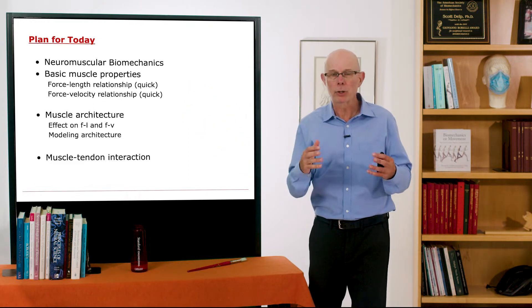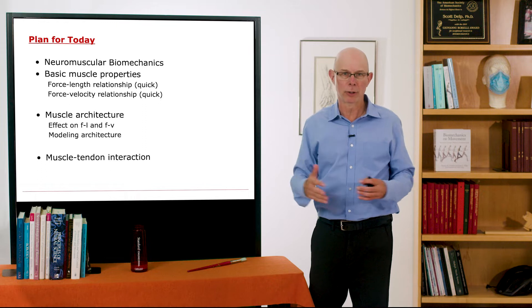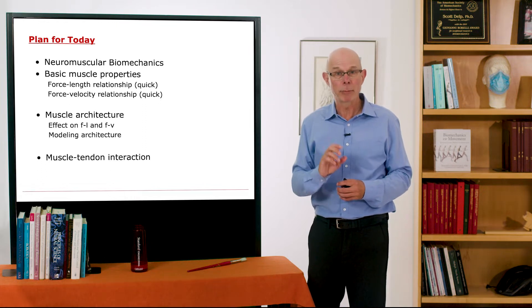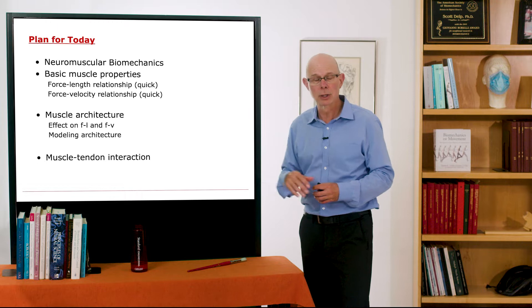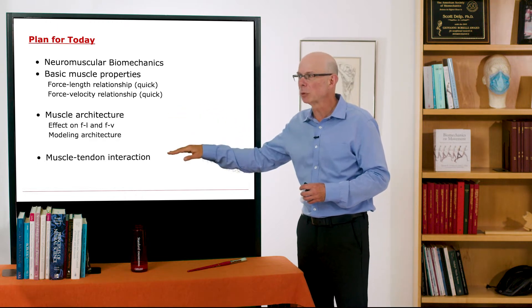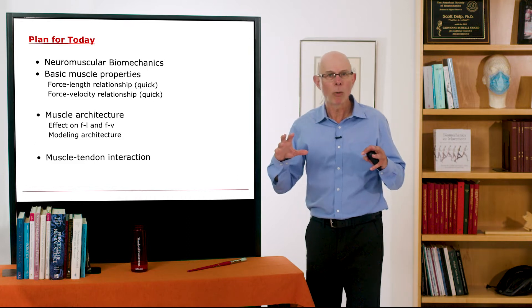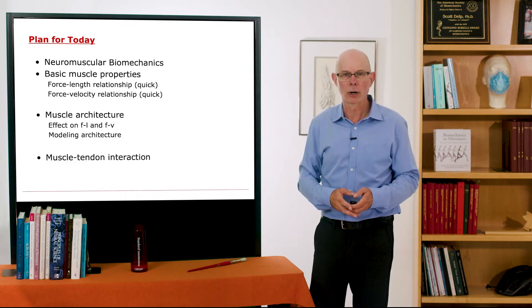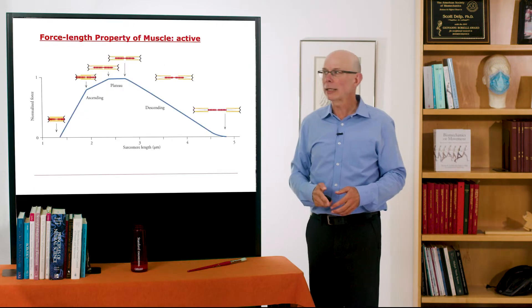I want to do this review because the architecture of muscle, that is how the fibers and tendon are laid out within a muscle-tendon complex, have a big influence on force-length and velocity properties. So we'll talk about that, and then we'll move into some interactions between muscle and tendon and how we mathematically model muscle-tendon architecture. So that's the plan.